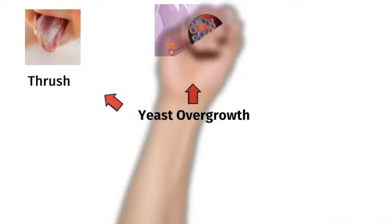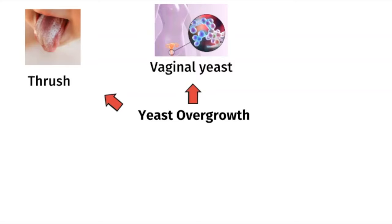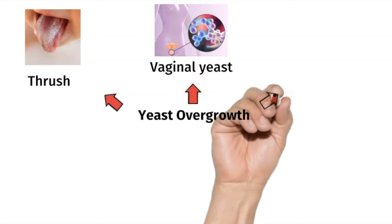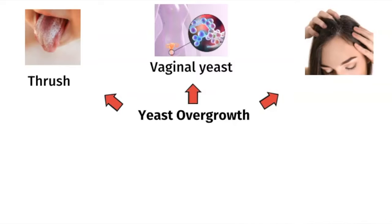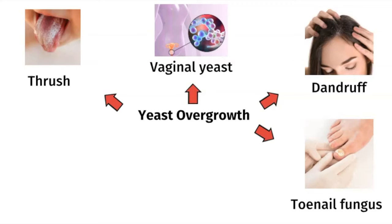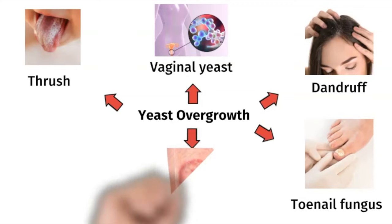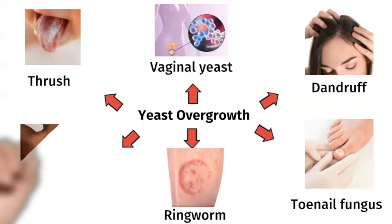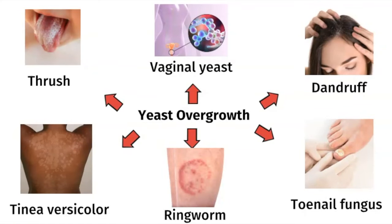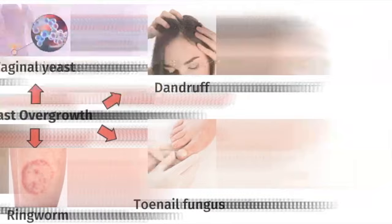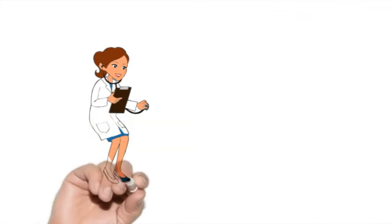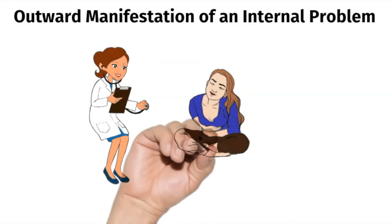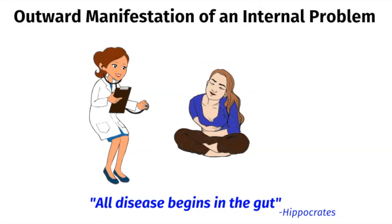An overgrowth of yeast causes different symptoms in different parts of the body. In the mouth it causes thrush, which is a white coating on the tongue. Women can get vaginal yeast infections presenting with white discharge, itching, burning, or redness. On the scalp, yeast overgrowth can present as dandruff. Toenail fungus is another symptom. Fungal overgrowth on the skin can cause an itchy raised circular rash called ringworm. It can also cause patches of lightening of the skin called hypopigmentation, known as tinea versicolor. When I see any of these symptoms, I think of it as an outward manifestation of an internal problem, because remember, all disease begins in the gut.